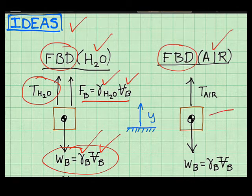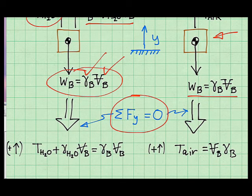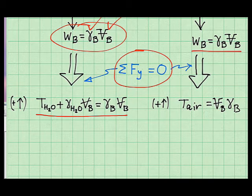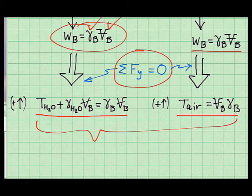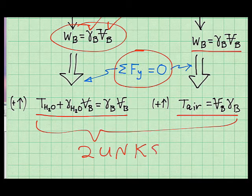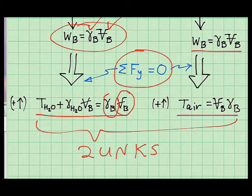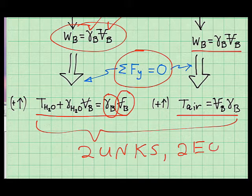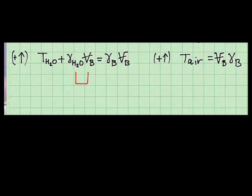When the block is in air, there's a tension force to hold the block stationary, and a weight force downward. So I applied force equilibrium to each free body diagram. Here's the equation when the block is in water. Here's the equation when the block is in air. And what you want to notice in these two equations is that there's two unknowns. And the two unknowns are the volume of the block and the specific weight of the block material. And so there's two unknowns and there's exactly two equations. So I can very easily solve these with algebra and reach the problem goals. So I numbered this equation as equation one and this equation as equation two.